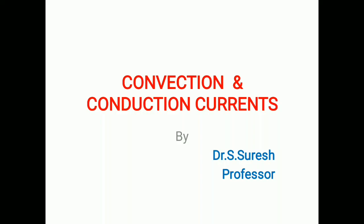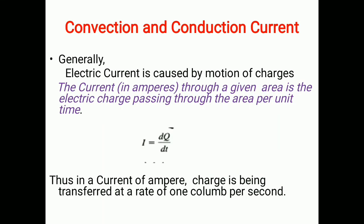We are going to see about convection current and conduction current. Generally, current is the flow of charges or motion of charges. Current through a given area is the electric charge passing through the area per unit time, that is I = dq/dt. Charges are transferred at a rate of one coulomb per second, where the charge unit is coulomb and time unit is second — coulomb per second is also called ampere.